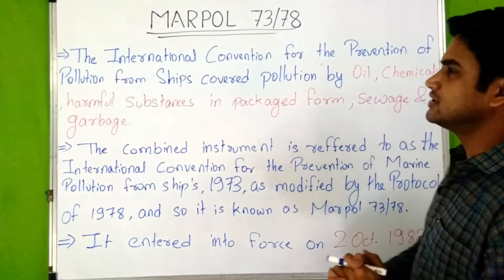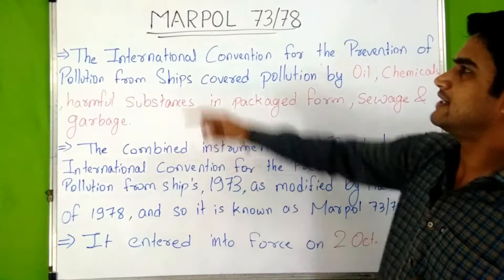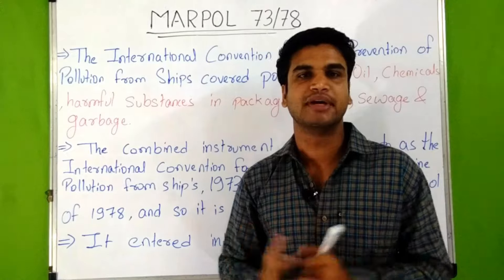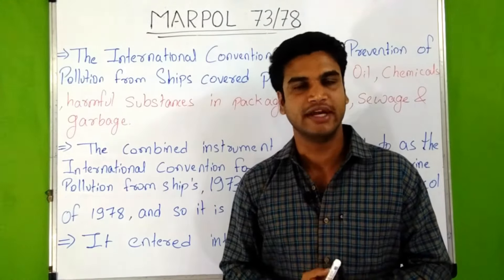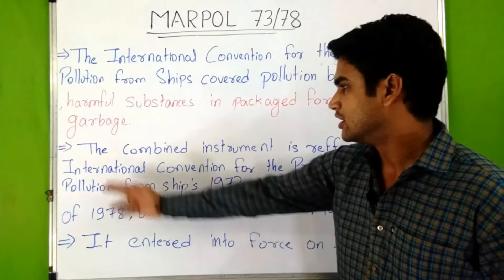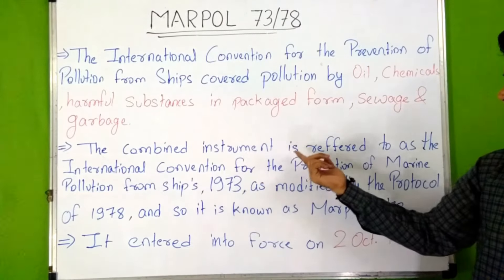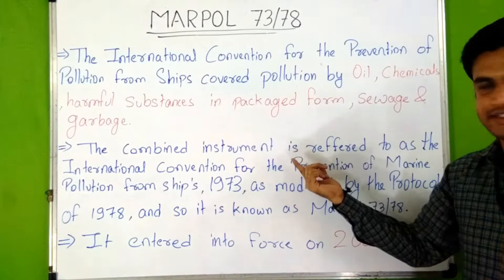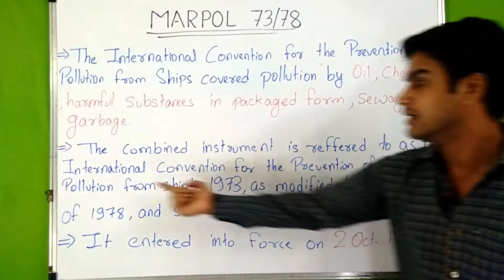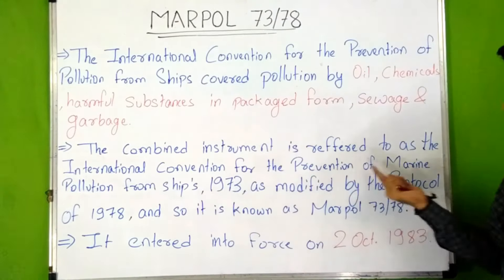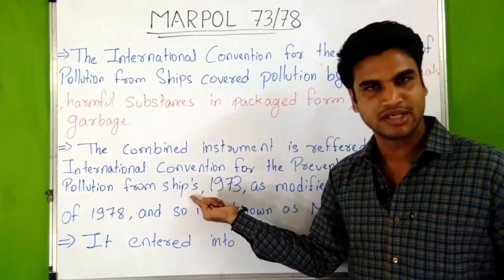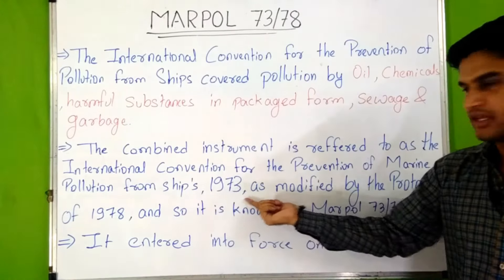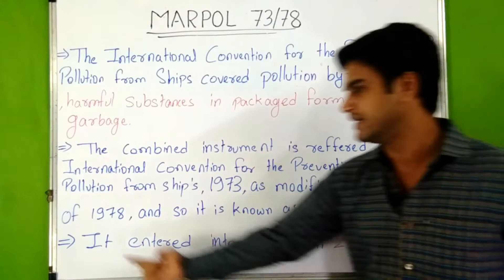Now the question is: why is it known as MARPOL 73/78? The MARPOL convention was adopted in 1973, but it was modified by the protocol of 1978. The combined instrument of 1973 and 1978 is referred to as the International Convention for the Prevention of Marine Pollution from Ships — in short, MARPOL 73 as modified by the protocol of 1978.